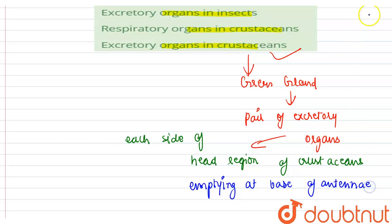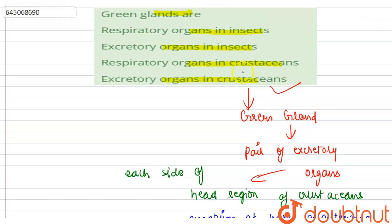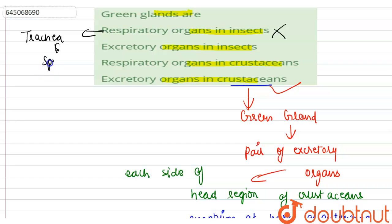So the correct option here is excretory organs in crustaceans. Now let us discuss the other options and why they are incorrect. The first option, respiratory organs in insects, is incorrect because the respiratory organs in insects are the trachea and spiracles. The excretory organs in insects are the malpighian tubules, so that option is also incorrect.